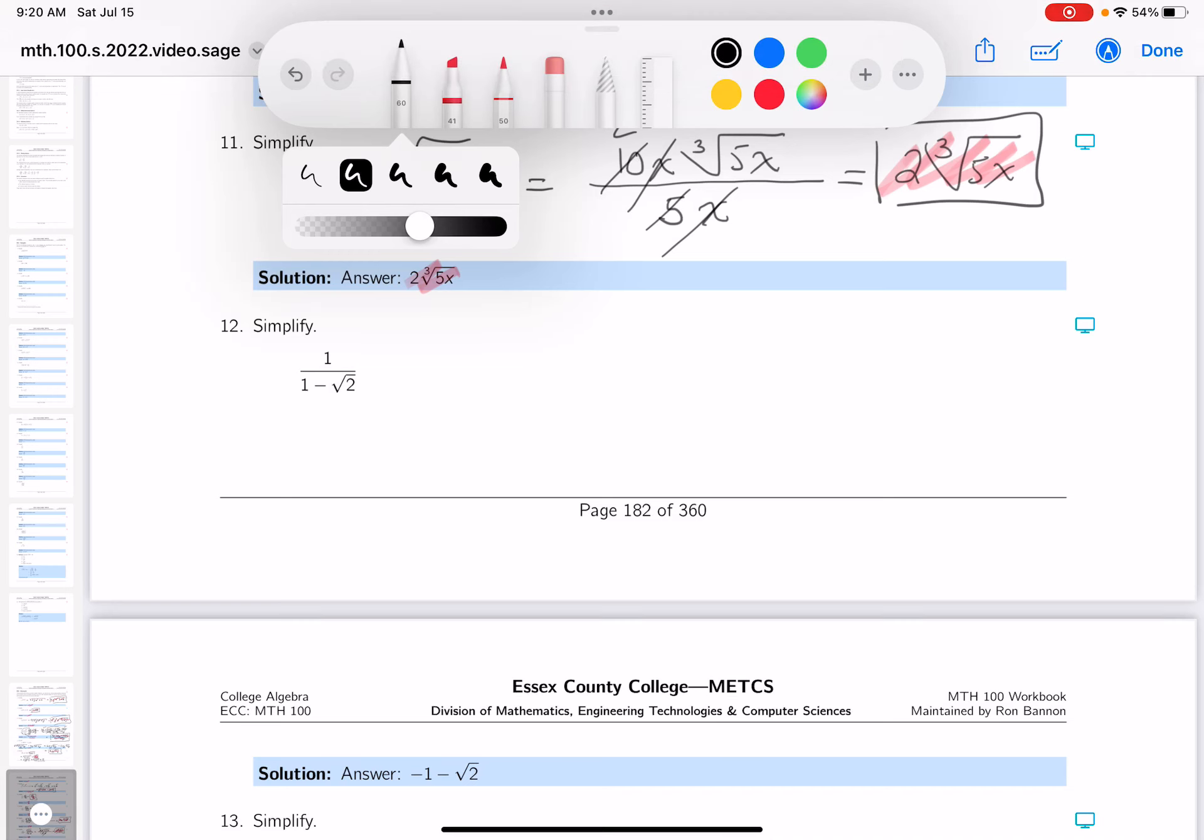All right, we've got a radical on the bottom. We're going to multiply the bottom by the bottom's conjugate. And what's that going to be?